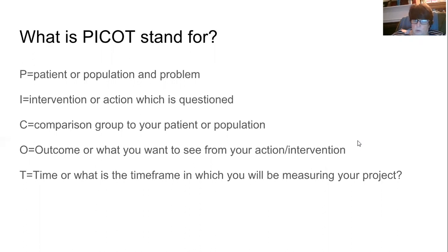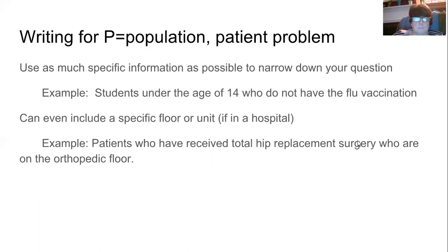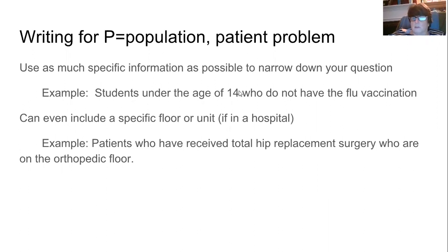So PICO is what we're going to practice. When you're writing your P statement, you want to be as specific as possible and narrow down your question so you're really addressing the patient or population problem you're looking at. For example, this first example shows 'students under the age of 14' — very specific, so I know exactly what the age group is. I'm not concerned whether they're boys or girls, so a general statement like that works. Then I want to look at who did not have the flu vaccine.